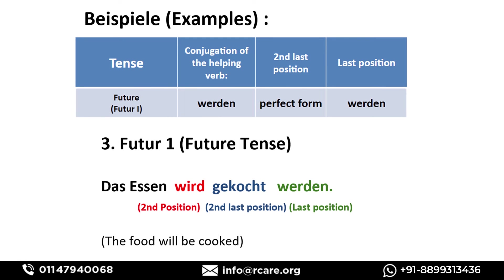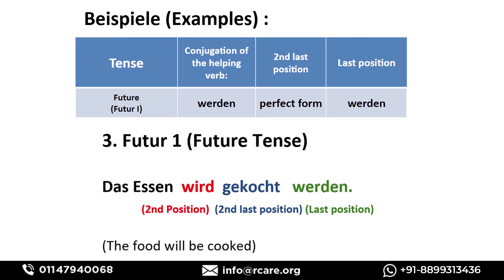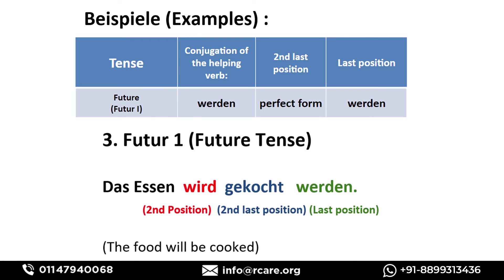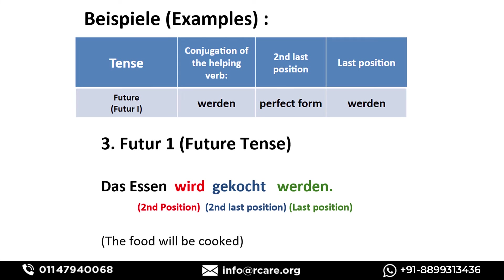Future tense: 'The food will be cooked.' You can see there are two 'werden' here. One is conjugated for passive voice at the second position, and the other 'werden' is at the last position in infinitive form. The regular verb 'gekocht' is at the second-last position in perfect participle form.